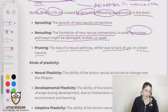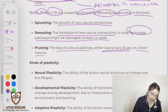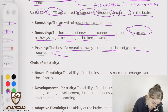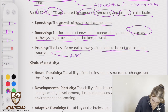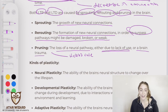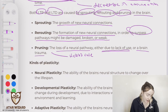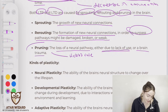When we look at pruning, we can look at Hebb's rule of neurons that fire together, wire together. So if they're not firing, then they're not wiring, and they're going to be pruned.